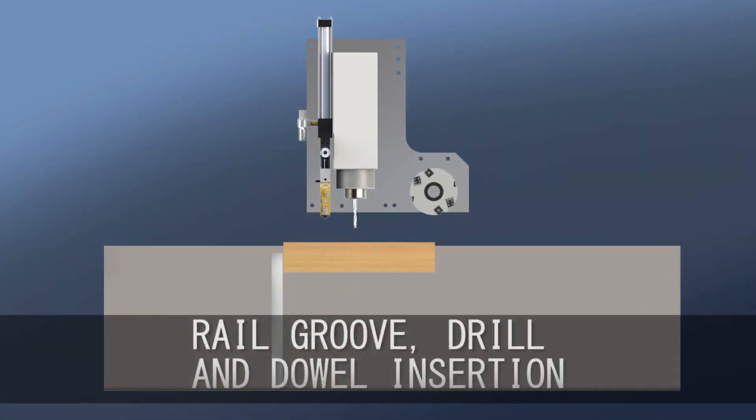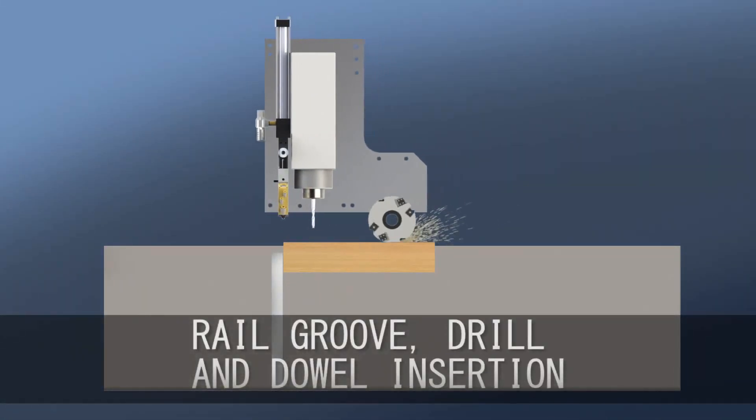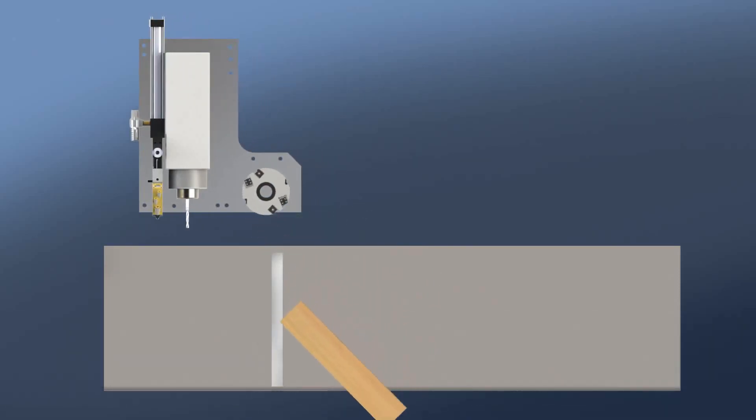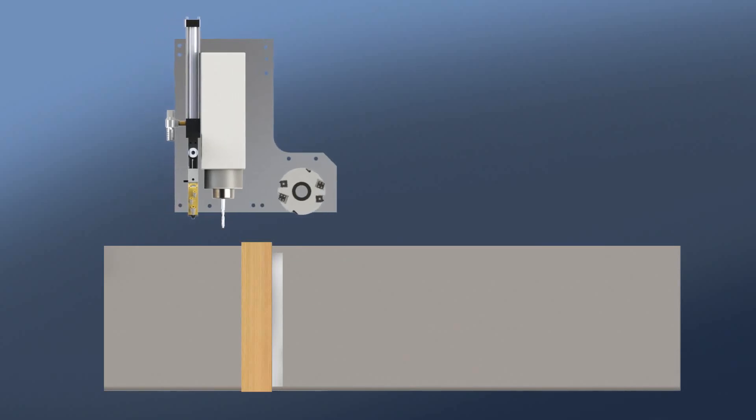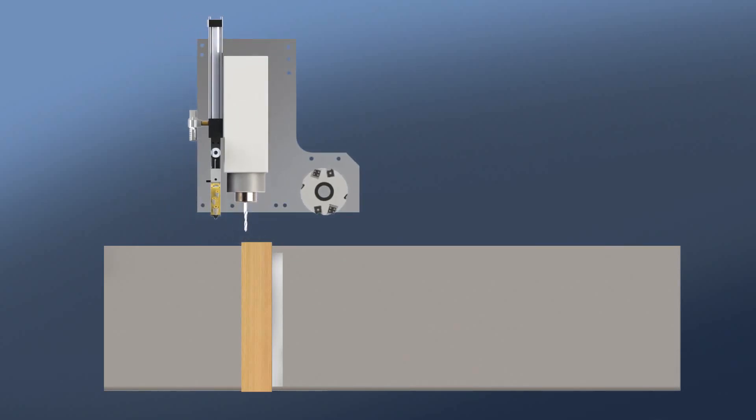When drilling holes, inserting dowels, and adding a panel groove to the rails, the user can pendulum process the groove first in zones 3 or 4, then move the rail to zones 1 and 2 for drilling and doweling.